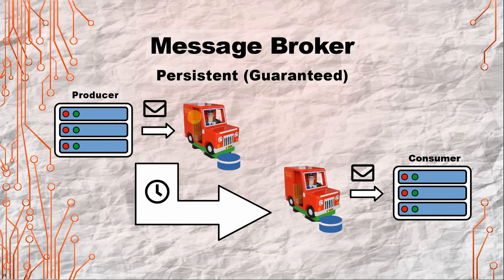Direct mode: you produce a message, send it to the broker, and the broker notifies the consumer that it is receiving a message, so the consumer goes and obtains it. Then there's the persistent guarantee mode, which is similar to direct but the message is also stored to the storage that the message broker is using. This is done because your consumer — another microservice — might be broken or something happened, and you want to make sure that the message doesn't get lost. The message broker keeps that message alive until the consumer comes back and requests it, like a post office handling delivery.